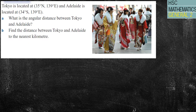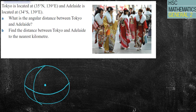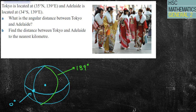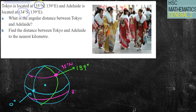Tokyo is located at 35 degrees north, 139 degrees east, and Adelaide is located at 34 degrees south, 139 degrees east. I'll draw a diagram: our equator and Greenwich Meridian mark the origin, and I'll draw in the 139 degrees east longitude line. Notice they both sit on that great circle — that same longitude line — but have different locations, one north and one south.